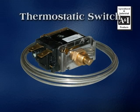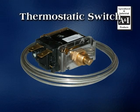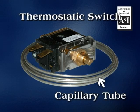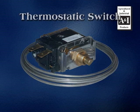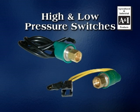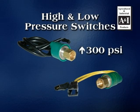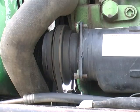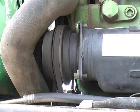The thermostatic switch should pass on current when the switch is turned to a colder setting than what the capillary tube is sensing from the evaporator. Current will then pass through the high and low pressure switches, as long as the pressure is not above the high pressure switch settings or below the low pressure switch settings. When everything is working together, the current will make its way to the compressor and engage the clutch.